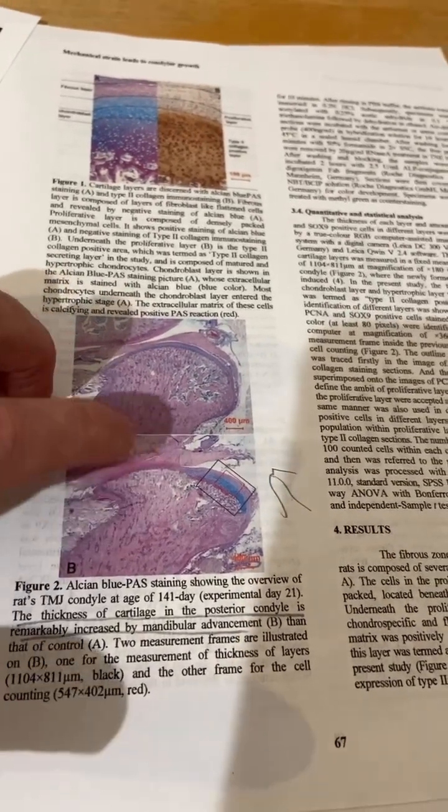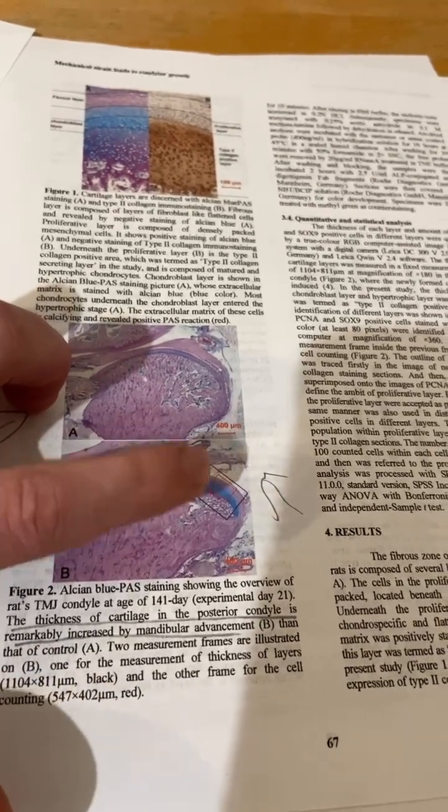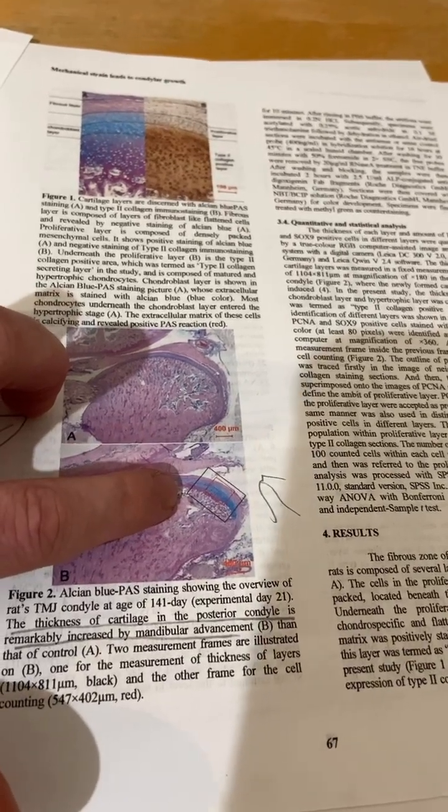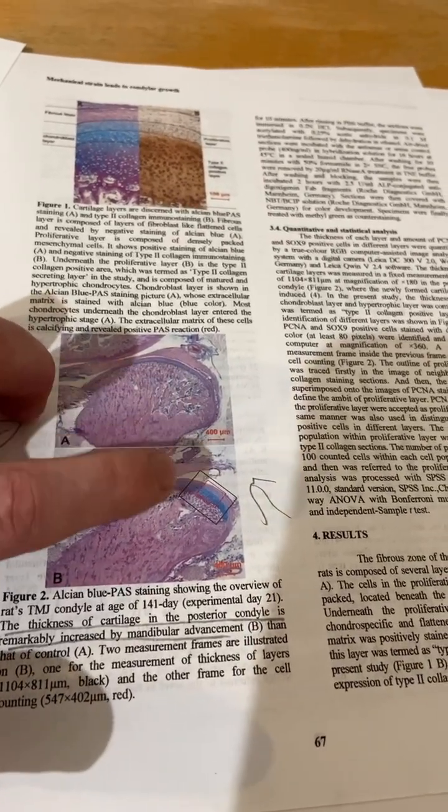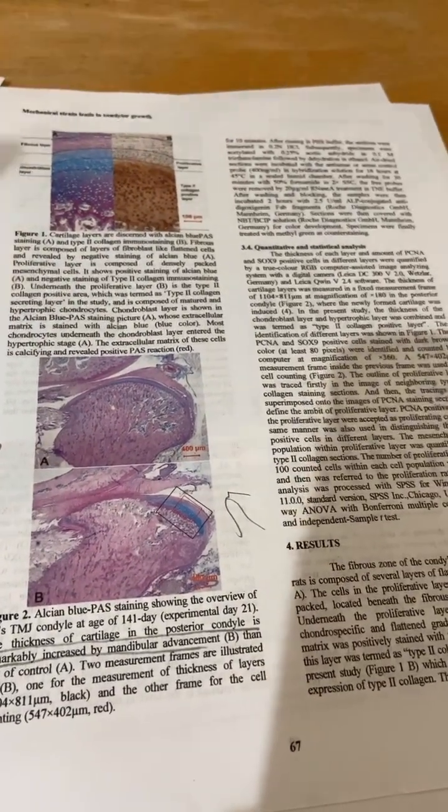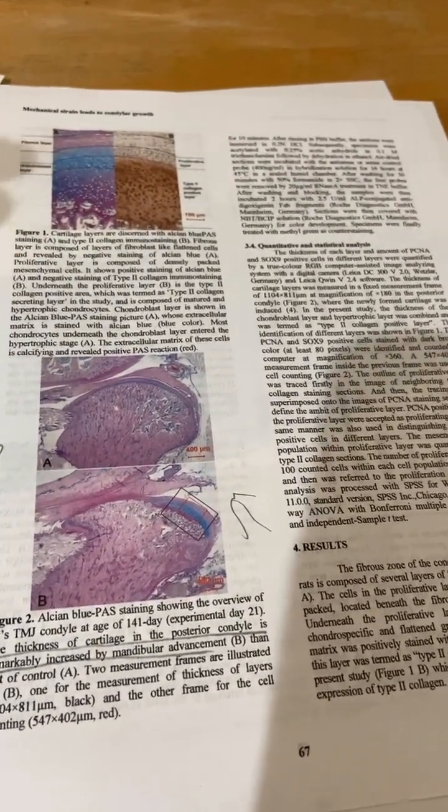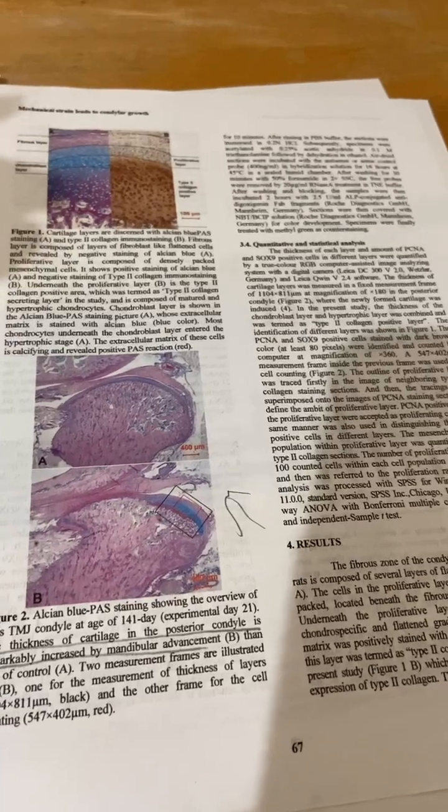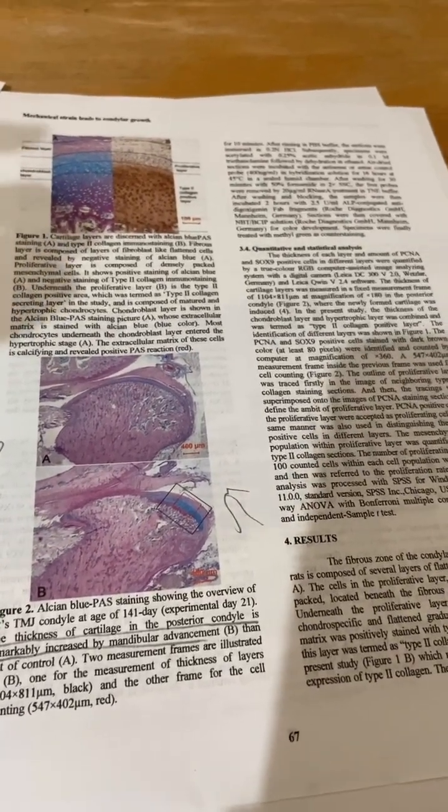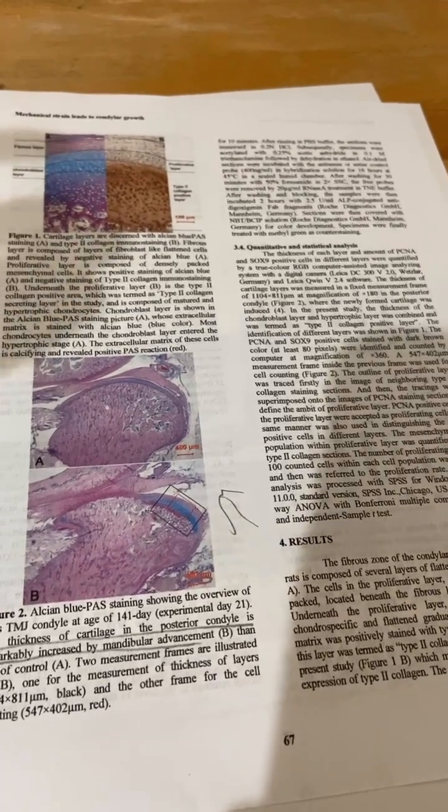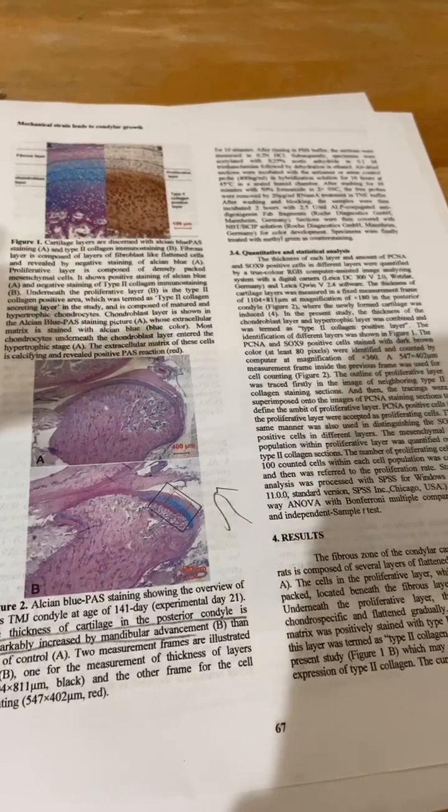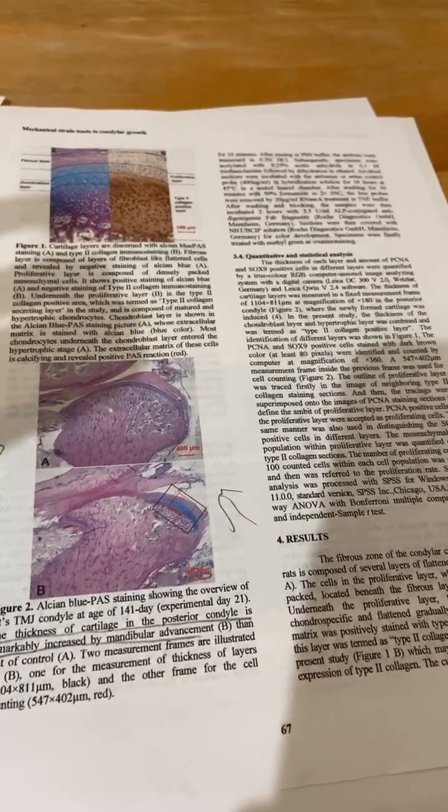That is a smoking gun that increasing height after skeletal maturity is possible in my view. You can say that the jaw is different. You can say maybe the cells in the jaw are special. But I would counteract and say maybe the cells in the jaw are special is because of the unique mechanical loading that the jaw is subject to. And maybe if we induce similar mechanical loading in the other joints of the body, maybe you can get similar results as we do in the jaw.